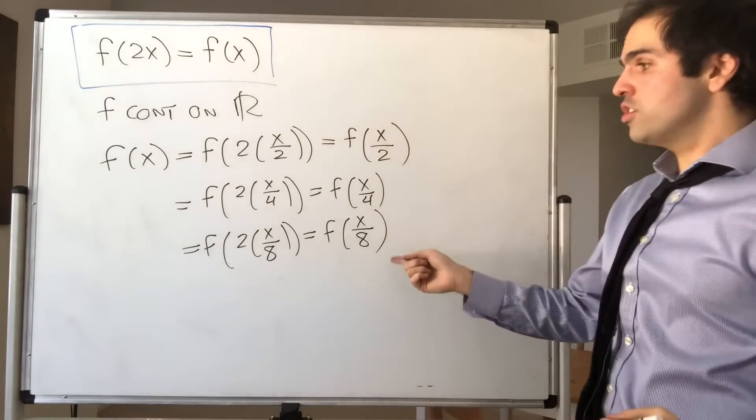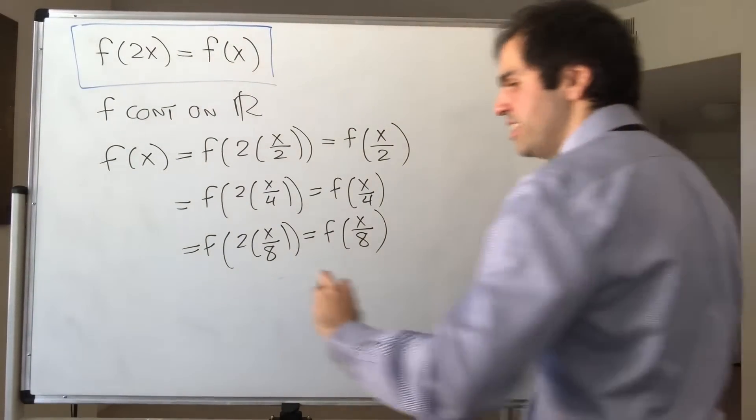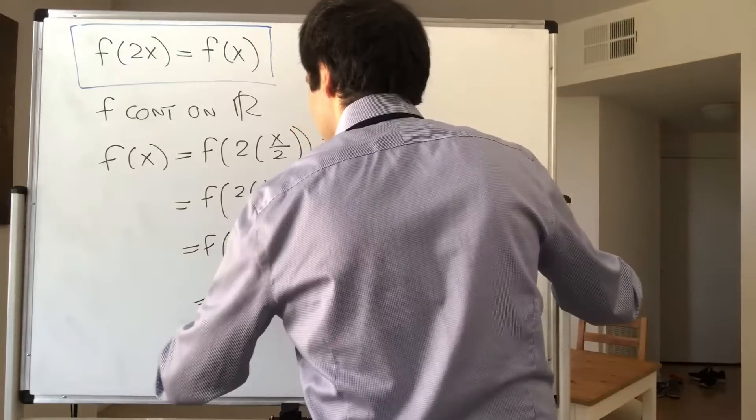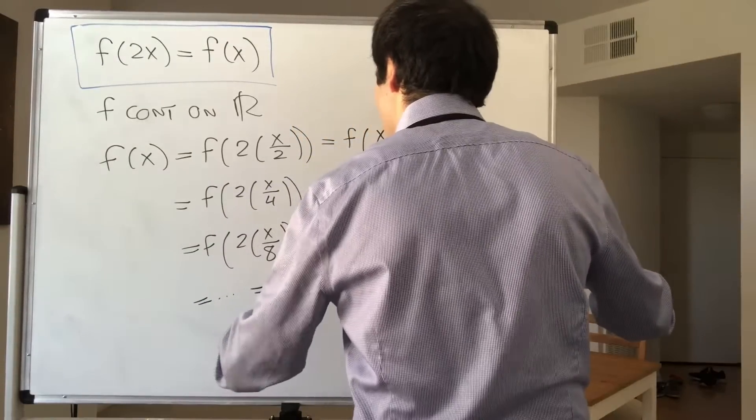So in general, you can just continue and you get that this is just for every n, this is f of x over 2 to the n.